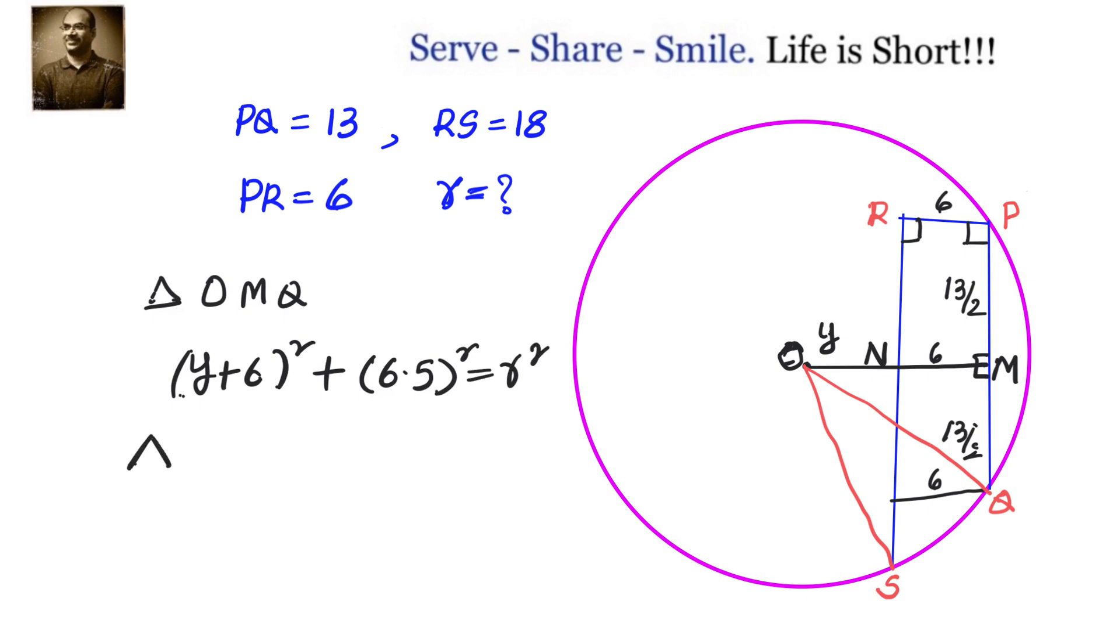Let us go to our next triangle, that is triangle ONS, in which we have Y² + 11.5² equals R². I explained you earlier how we got NS as 11.5, because RN is 6.5, left out NS is 11.5.